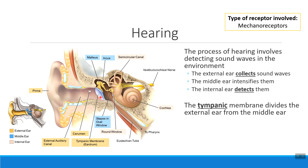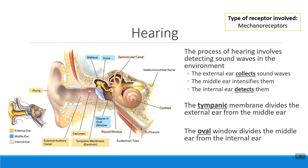To transition sounds from the middle ear into the internal ear, we have another membrane right underneath the stapes. That other little membrane is called the oval window. The oval window is where sound waves transition from the middle ear into the internal ear, where we'll actually be able to perceive them.